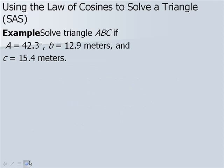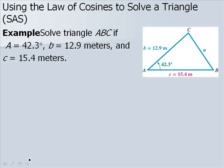Here we'll use the Law of Cosines to solve a triangle given side-angle-side. We have angle A is 42.3 degrees, side B is 12.9 meters, and side C is 15.4 meters. The first thing we'll do is find side A using the Law of Cosines. We know that A squared will be equal to B squared plus C squared minus 2BC cosine of angle A.